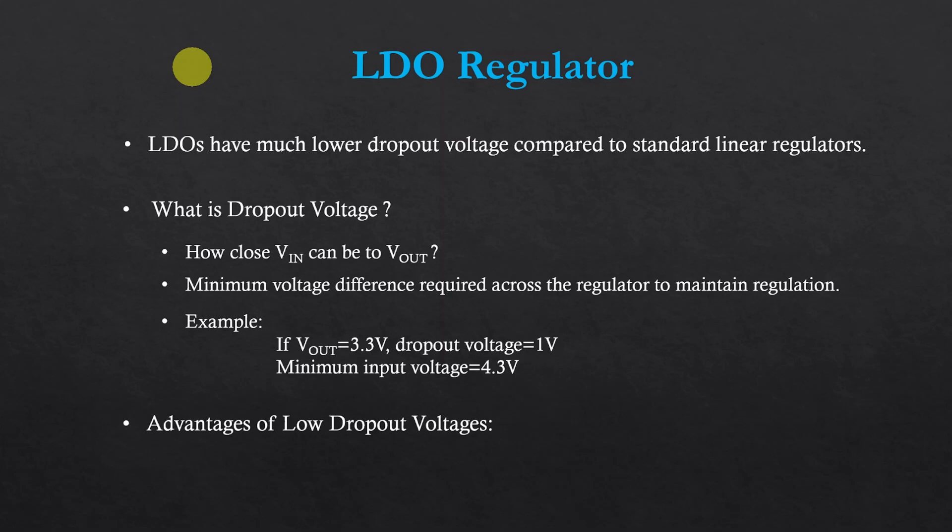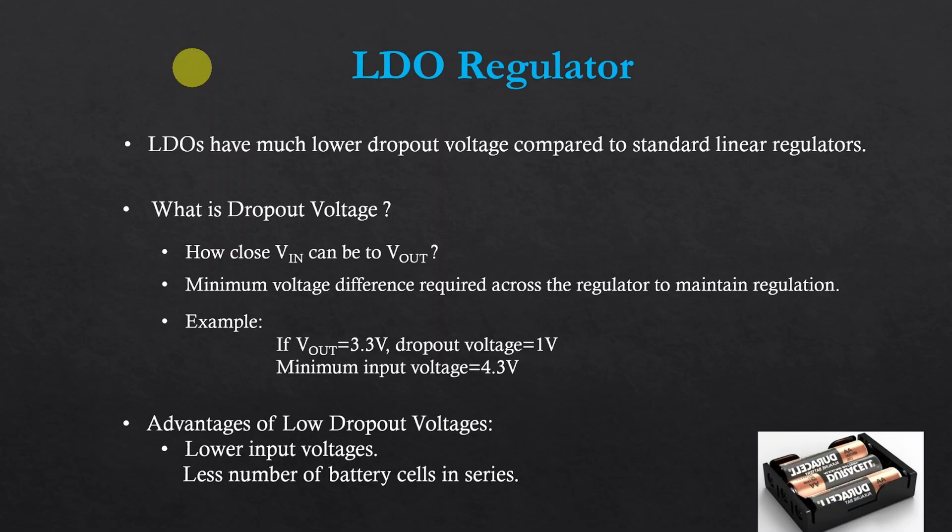Choosing an LDO regulator over a standard linear regulator lets you use lower input voltages for your application. If your project is powered by batteries, this will mean you can use less number of battery cells in series. Using lower input voltages also results in lower power losses in the regulator because power loss is proportional to the difference between input and output voltage of the regulator.